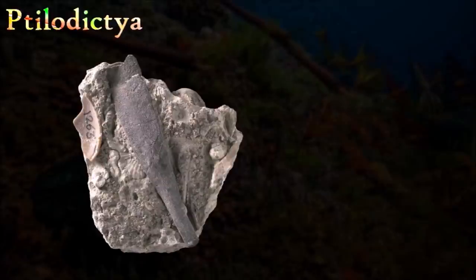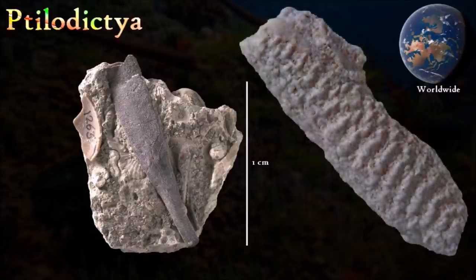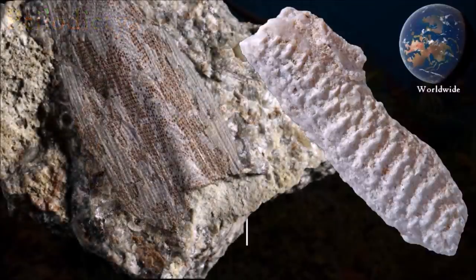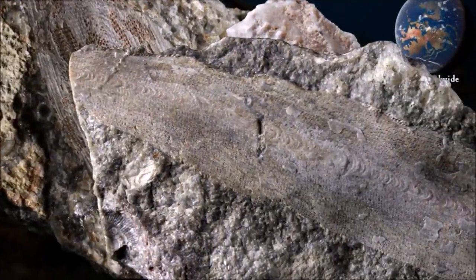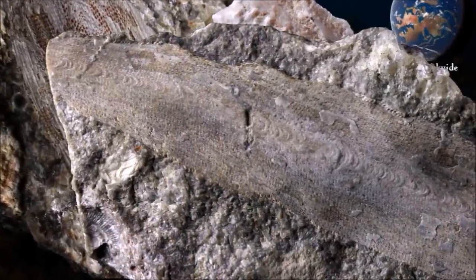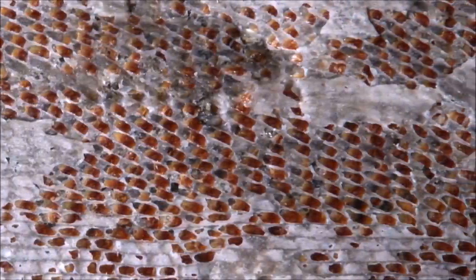Tillodictia was an upright bryozoan colony made up of one straight or slightly curved branch; at the base was a conical socket that allowed the colony to articulate. Rectangular holes on the surface opened to the autozoecia, where the individual soft-bodied animals known as autozooids lived. These feeding autozooids had a lophophore — a ring of tentacles surrounding their mouths — which could be withdrawn into the autozoecia when the zooid was not feeding.